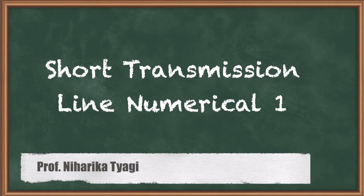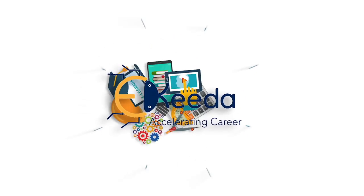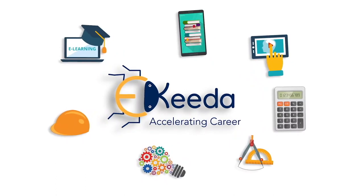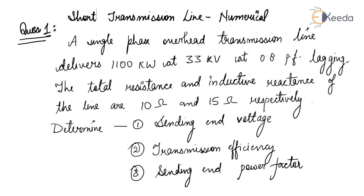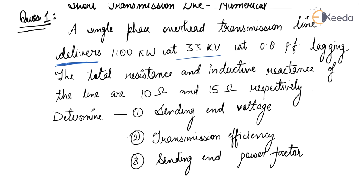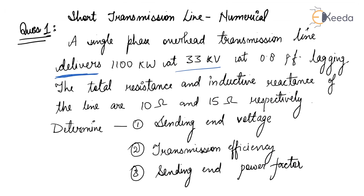Hello friends, welcome to eKIDA. Now we'll do some numericals on short transmission line. The question is: a single phase overhead transmission line delivers 1100 kilowatt at 33 kV at 0.8 power factor lagging. This means the receiving end voltage is 33 kV at 0.8 power factor lagging. The total resistance and inductive reactance of the line are 10 ohm and 15 ohm respectively.